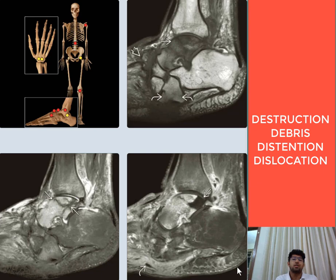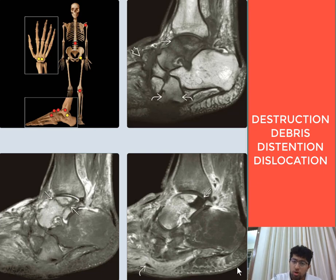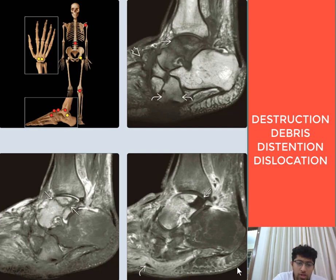More debris is usually seen in Charcot's joint, and the amount of debris reduces as infection sets in. Both Charcot's joint alone and osteomyelitis show enhancement on contrast imaging, so enhancement does not help differentiate between the two conditions.